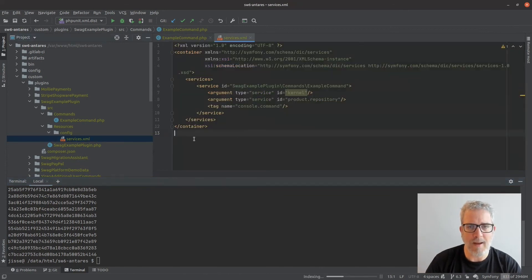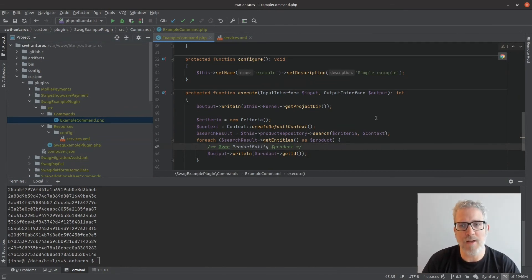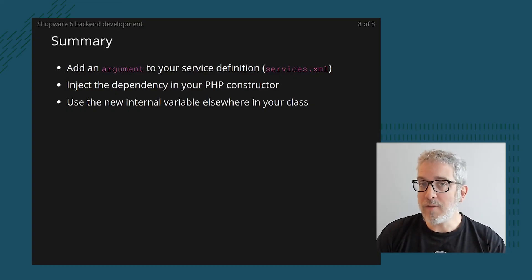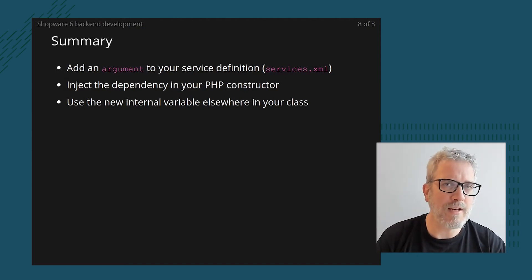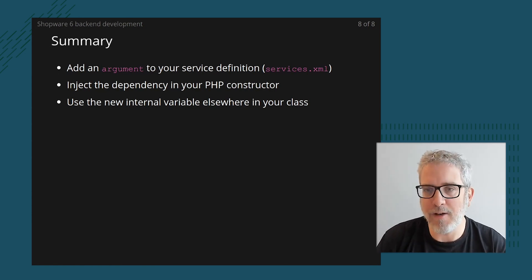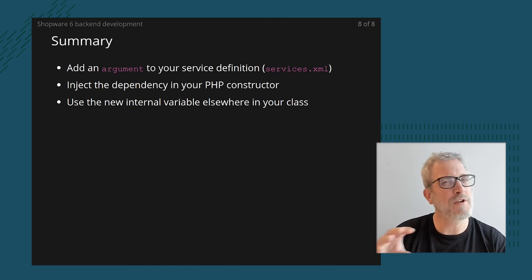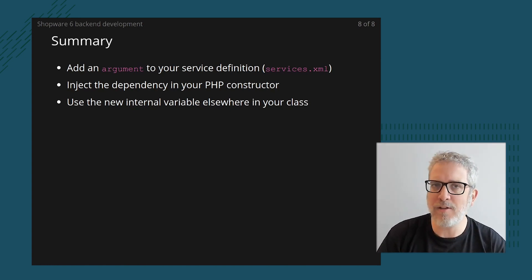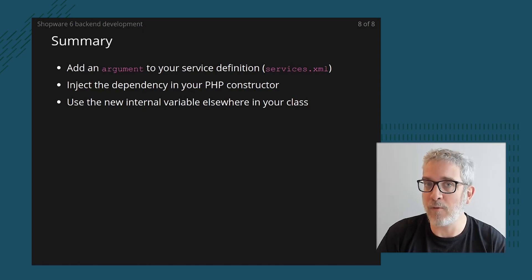Hopefully you get the point: by inserting something as an argument in XML and then using those arguments in PHP, we can start playing with the code step by step and get further into the Shopware architecture. To summarize: step one is define your argument in services.xml, step two is inject that same dependency into your PHP constructor, and step three is start using that dependency as an internal variable. There's much more to explore — what arguments can you use, what dependencies are available, how to define your own — but that's it for now.